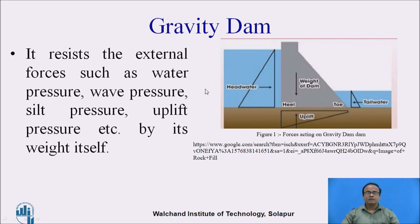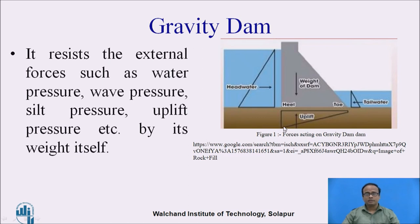Now let us consider the gravity DAM. The various forces acting on the gravity DAM are forces due to water pressure, wave pressure, silt pressure, and uplift pressure. As we can see in this figure, there is a force due to water pressure, a force due to uplift pressure, and a force due to tail water. Other forces include silt pressure, wave pressure, and earthquake forces acting on a DAM.